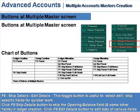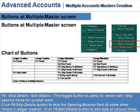F8 Skip Details / Edit Details. This toggle button is useful to select edit or skip specific fields mode for quicker work. Click the F8 Skip Details button to skip the opening balance field and some other fields in ledger creation. Click the F8 Edit Details button to edit data of various fields.